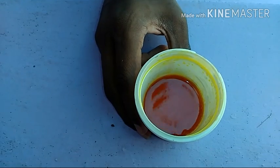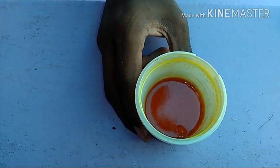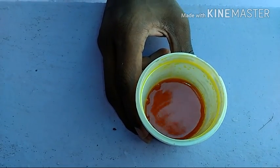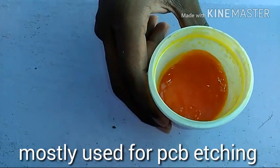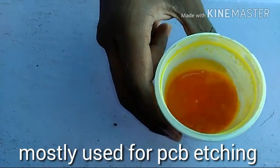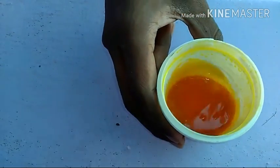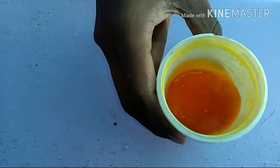Ferric chloride is mostly used by electronics hobbyists for etching of PCBs. Ferric chloride etches the copper present in the copper clad board and clearly forms the circuit board for making circuits.